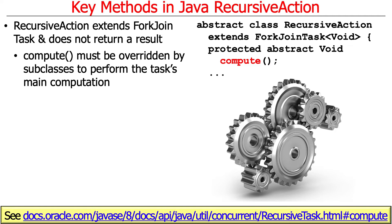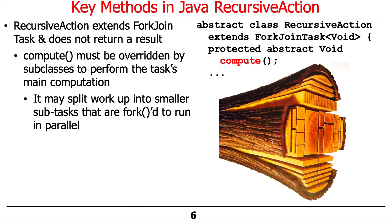Compute will be overridden to perform the task's main computation. Because the fork-join framework came prior to Java 8, this class is not a functional interface and therefore you can't use lambda expressions — it's a little more unwieldy than we might like, but that's what you have to live with. The compute method is typically written in a very canonical way: it looks at the work it's been given and figures out whether it should split things into smaller subtasks to be forked to run in parallel.